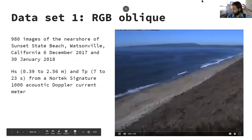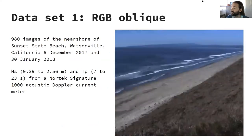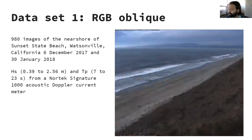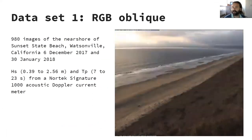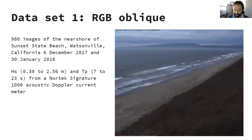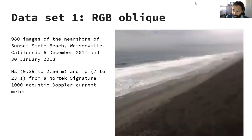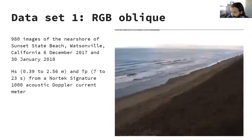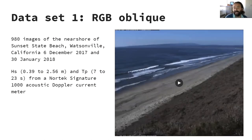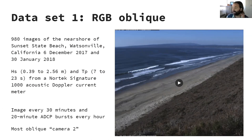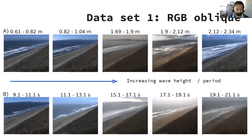The first dataset comes from Sunset State Beach near Watsonville in Monterey Bay near Santa Cruz. This time series has been collected by Sean Harrison and John Warwick at USGS for several years. The dataset I used coincided with an ADCP deployment just offshore in about 10 meters of water over two months. Wave height varied from about 40 centimeters to about two and a half meters; peak wave period ranged between about 7 and 23 seconds — measured in about 10 meters of water just offshore. An image was collected every 30 minutes and the ADCP measurements used 20-minute bursts every hour, so the ADCP data had to be interpolated over the image timestamps. I used the most oblique camera in this two-camera system.